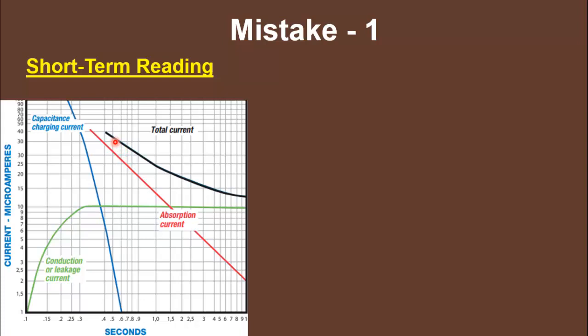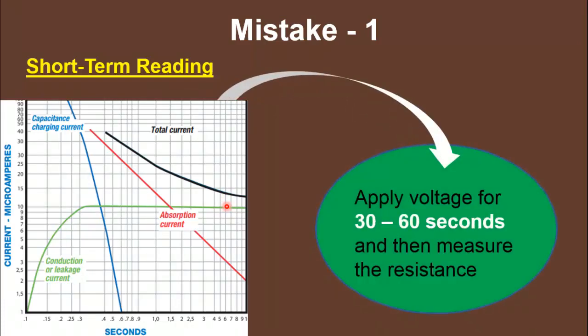At the start of the test voltage, the amount of current is very high, so you see a low resistance value on the Megger. As time passes, this current settles down and reflects only the true leakage current. Therefore, to take a correct reading, we must apply the voltage on the equipment for 30 to 60 seconds before measuring the resistance, otherwise you will get an incorrect value.